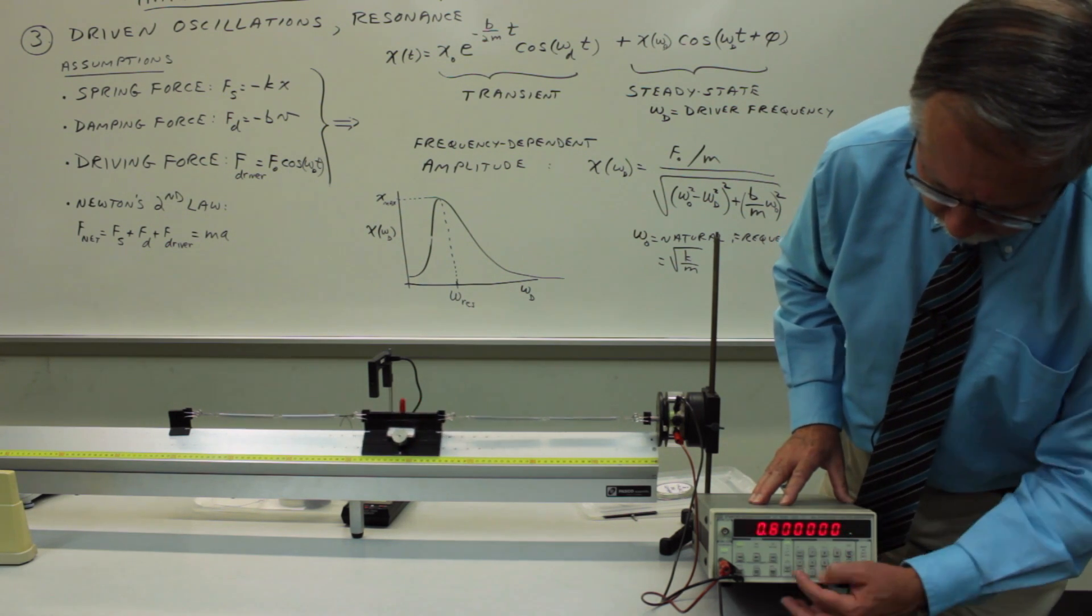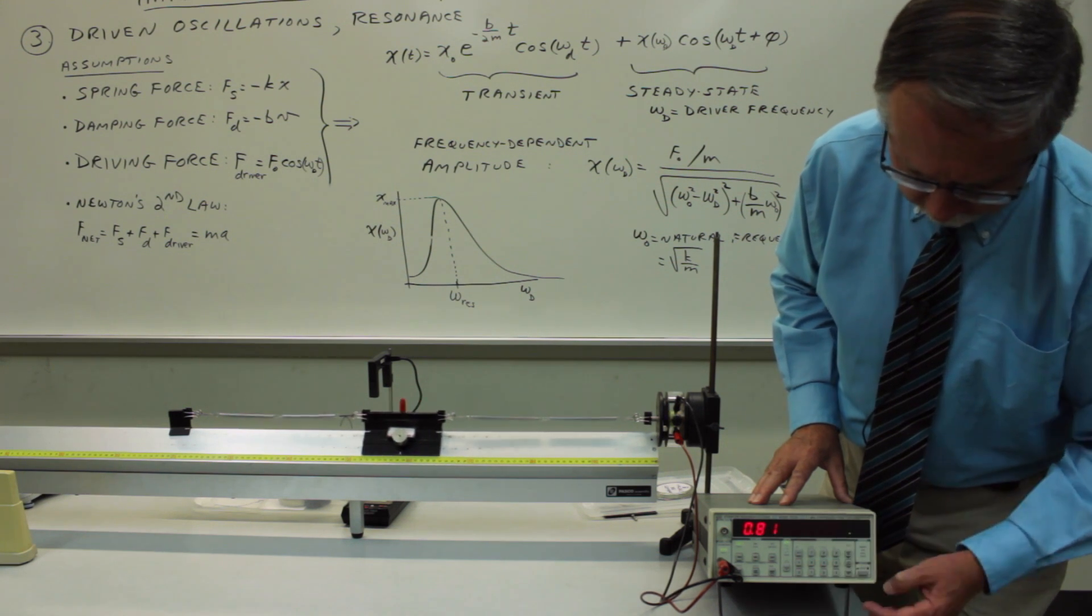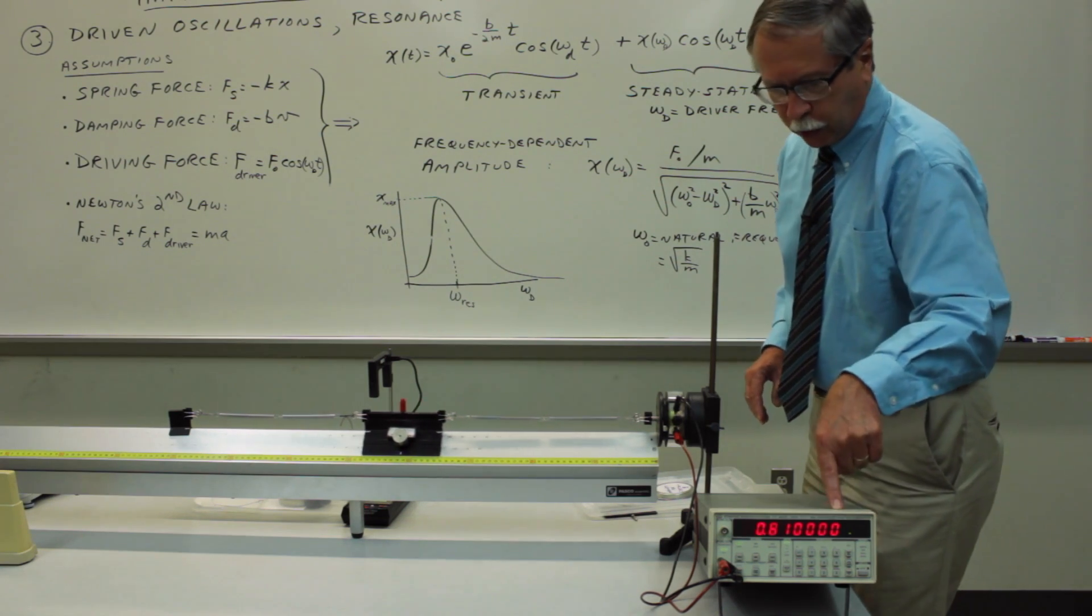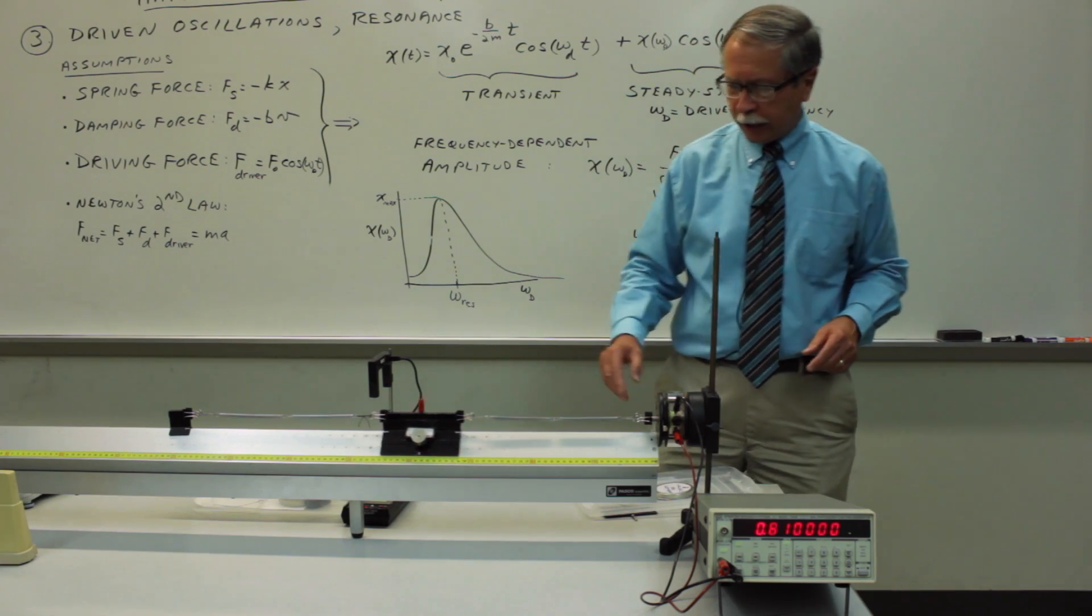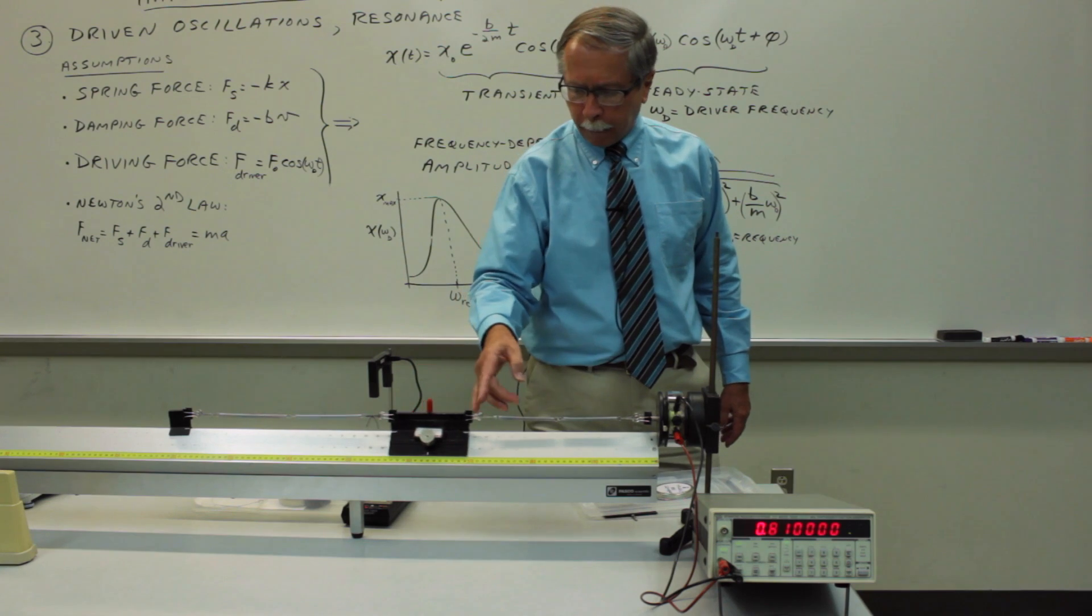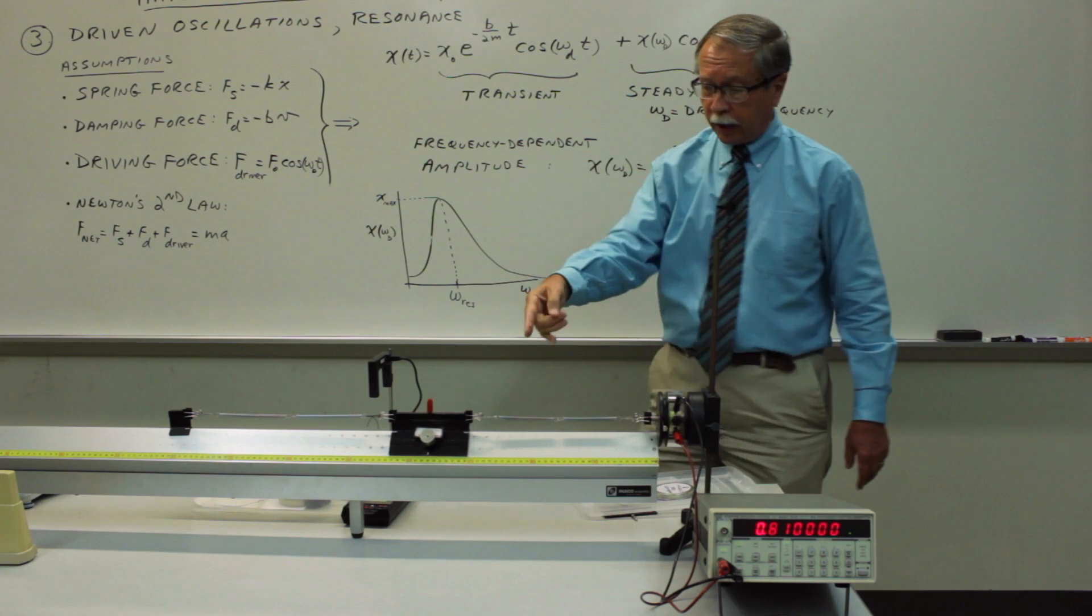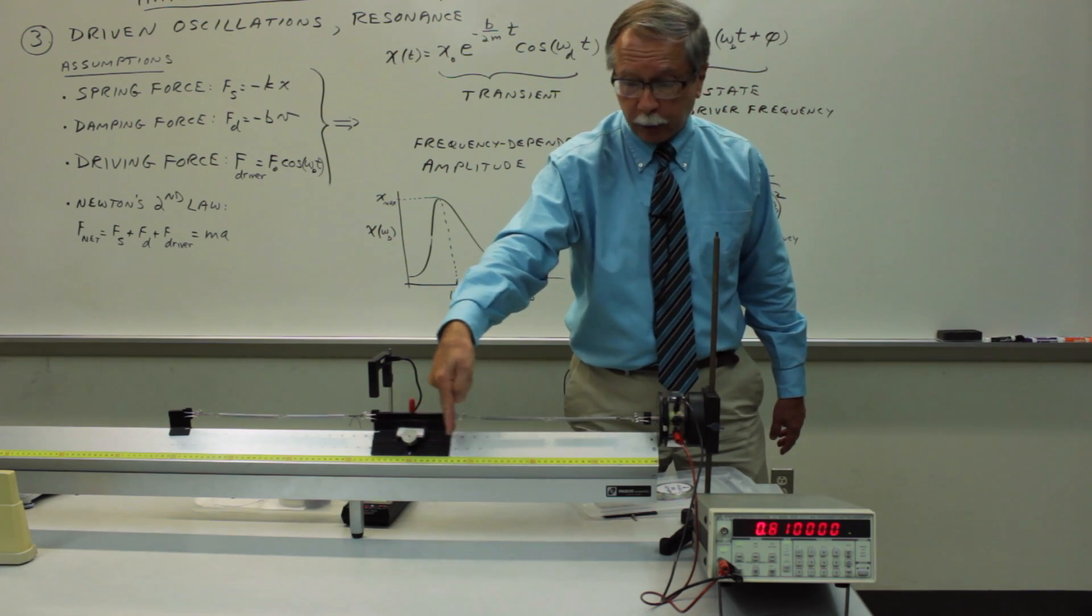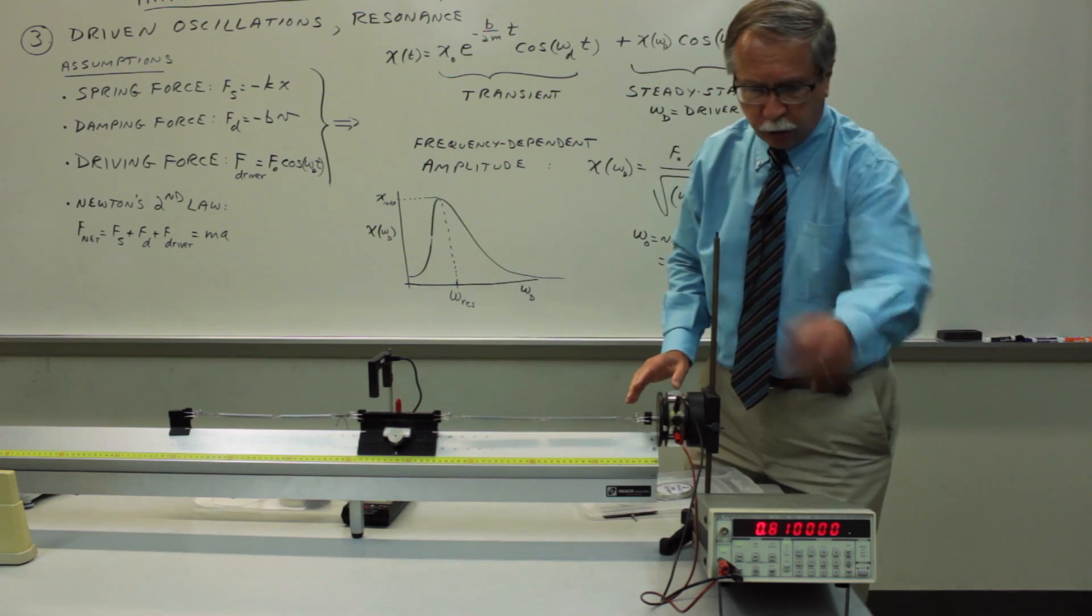So it's set at 0.8. We'll just make it 0.81 hertz. And do remember to press the hertz button. Otherwise the frequency won't change. It will still be 0.8. So you have to enter the hertz as well as the number. So again, wait for the transient to die out before you take a measurement. And then measure as carefully as you can what is the amplitude of oscillation for this new frequency. Then change the frequency again.